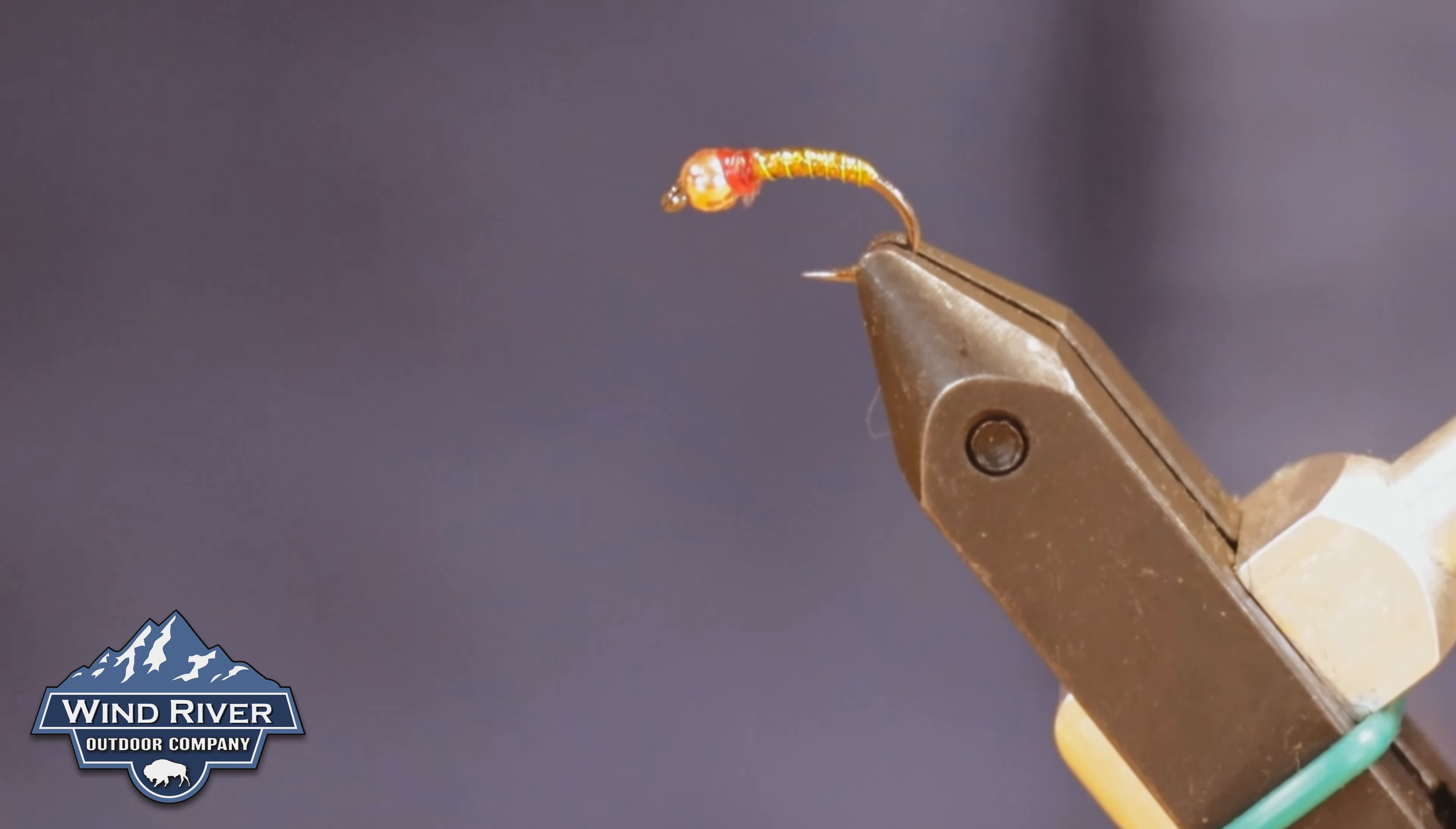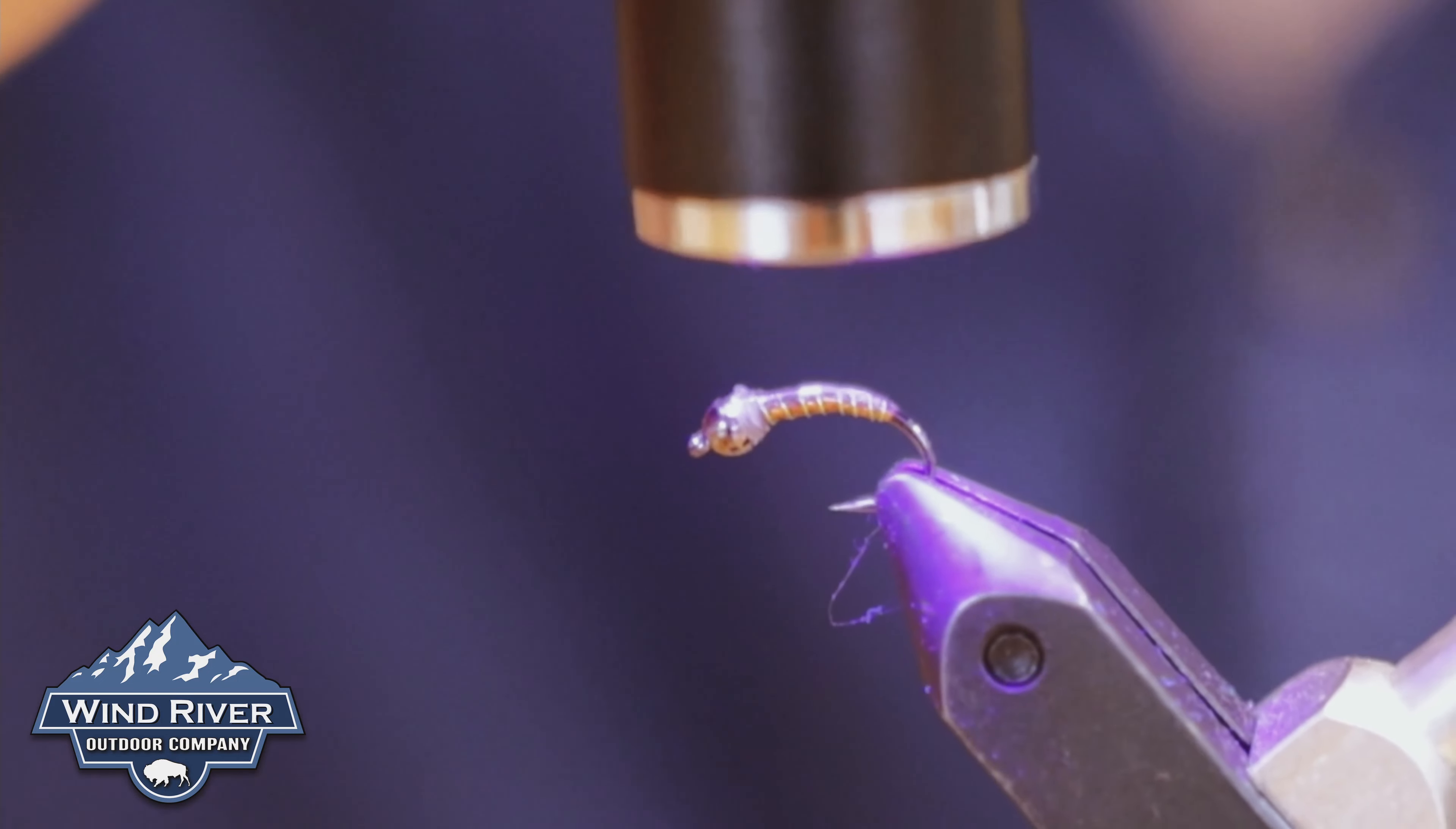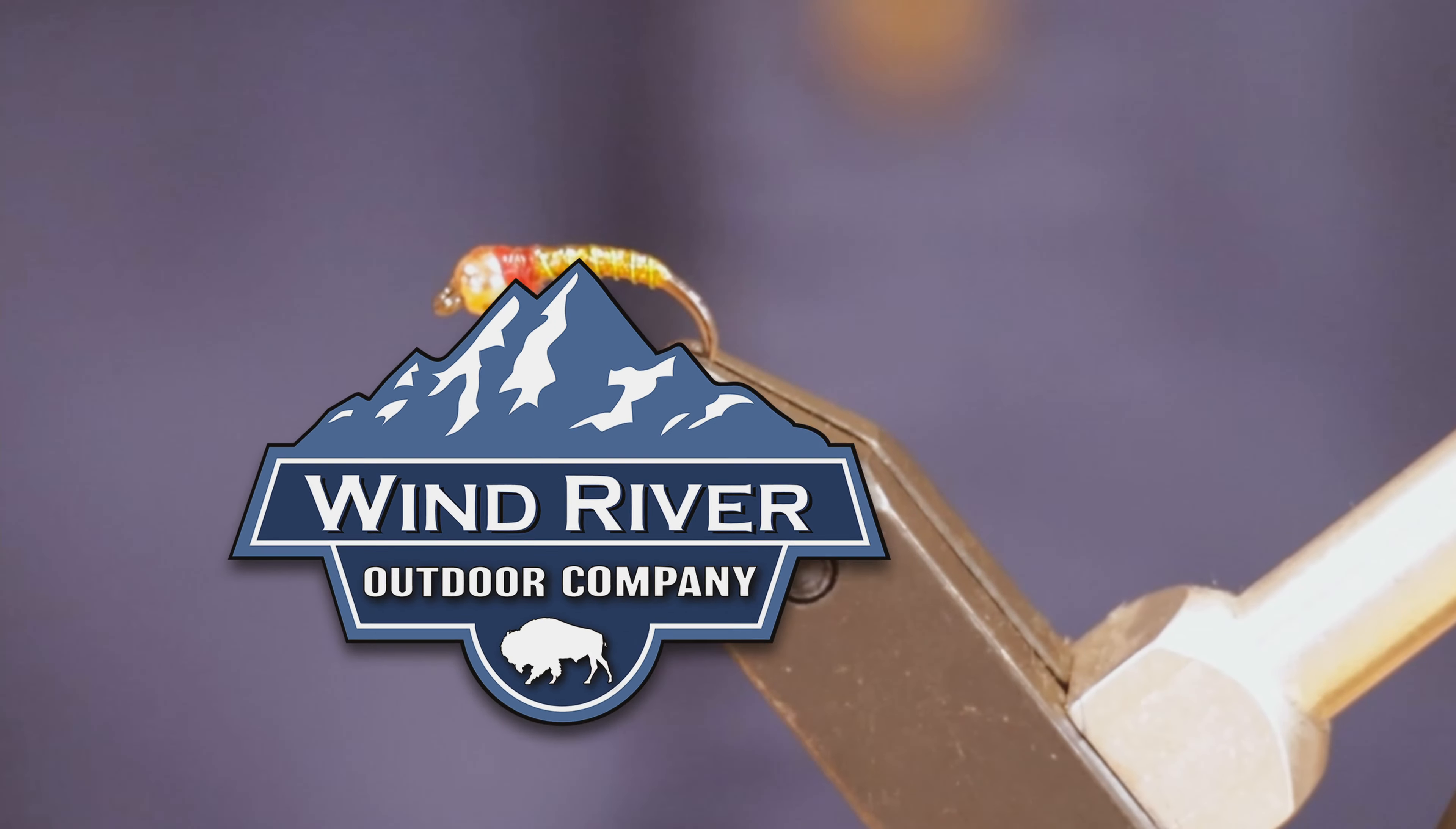And there you have it. That is the root beer midge. I've not seen anybody tie it like this, but it's so simple. It's like a holographic tinsel zebra midge. So I'm not claiming this as a pattern or anything like that, but it does fish like the Dickens. So check it out. You can tie it in copper. You can tie it in black nickel. You can tie it jig. You can tie it straight. The world's your oyster.